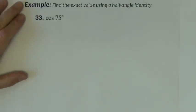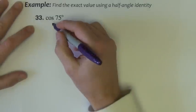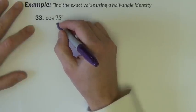Alright, so a few examples of using the half-angle identity to find the exact value of a trig function. The question is cosine 75 degrees.